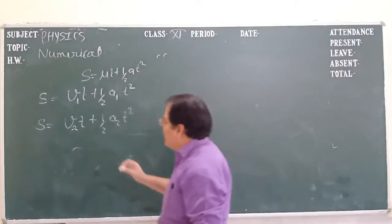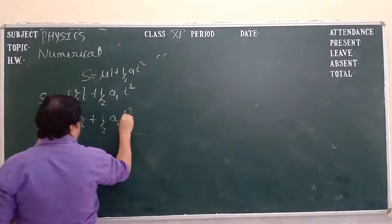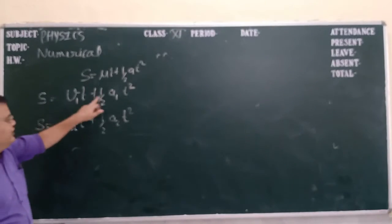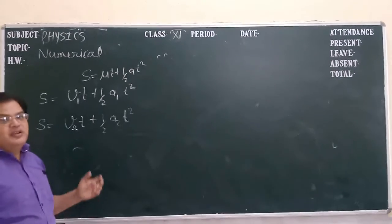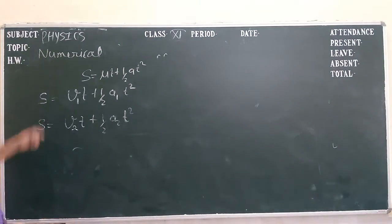Both the cards will reach at the same time. So s is equal to this for the second car also. We have to find the total length, so there is a comparison.